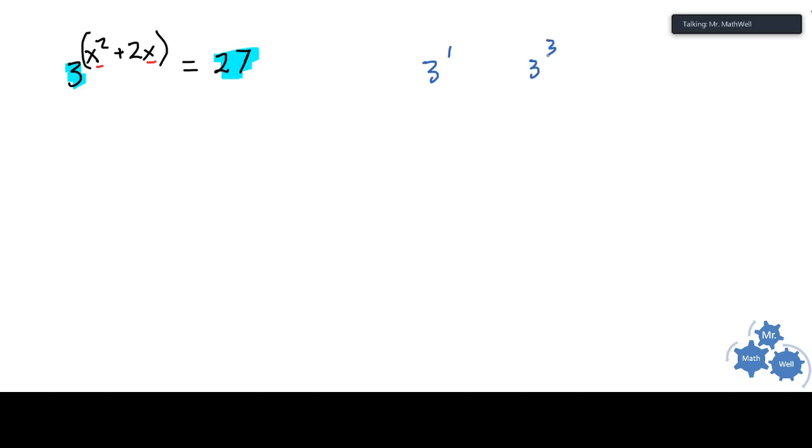So when we try to solve this, one of the ways we can do that is to transform one side into a power that has the base the same as the other side. So watch this. This is three to the power of x squared plus two x, and this 27 is equal to three cubed. Now that's important because we have basically two powers with the same base.